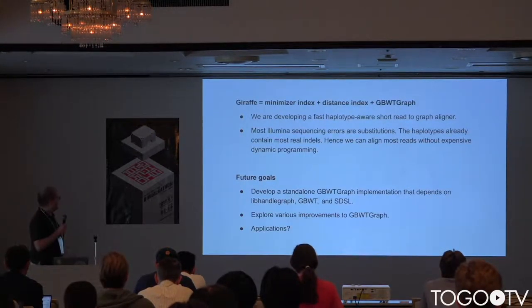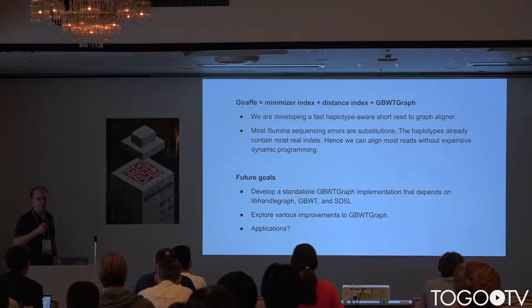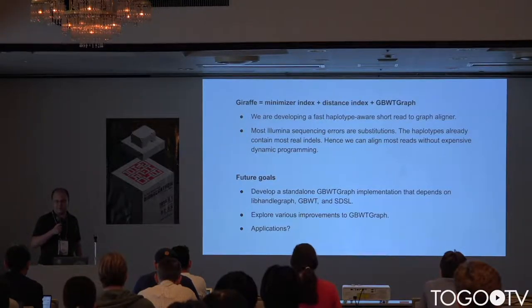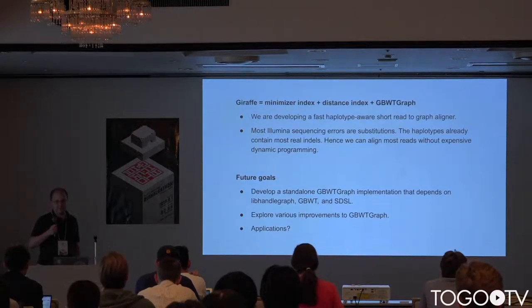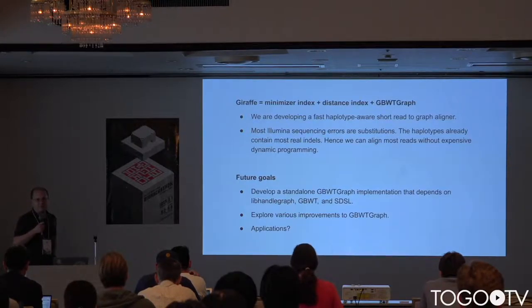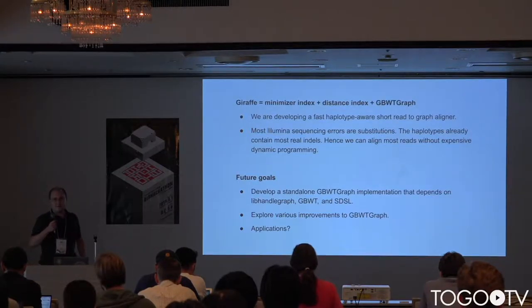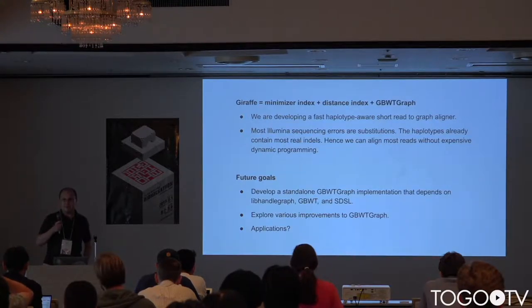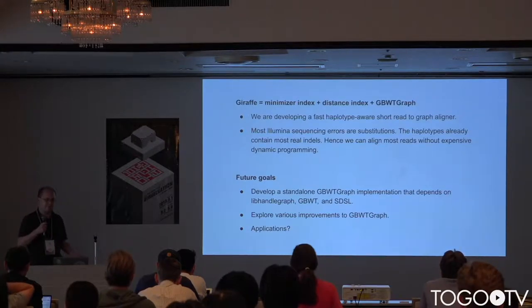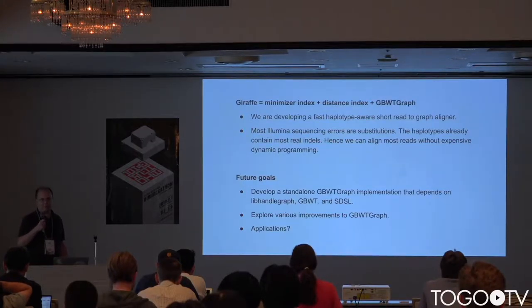We developed this for Giraffe, which is a work in progress. It's going to be hopefully a fast haplotype-aware short read to graph aligner. The basic idea is that because the haplotypes already contain most real indels, and because in Illumina reads the sequencing errors are mostly substitutions, we can hopefully align almost all reads to haplotypes without any indels.